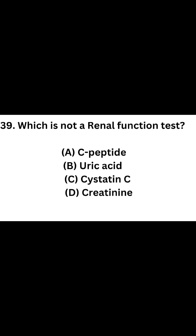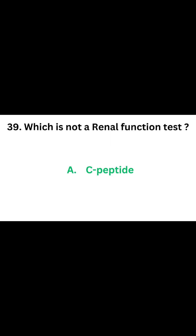Question number 39. Which is not a renal function test? Option A: C-peptide. Option B: Uric acid. Option C: Cystatin C. Option D: Creatinine. The correct answer is Option A. C-peptide test is not a renal function test. Cystatin C is used to calculate GFR.